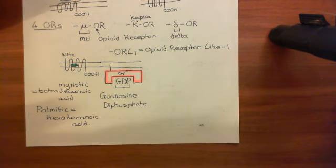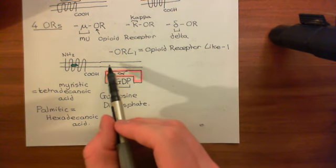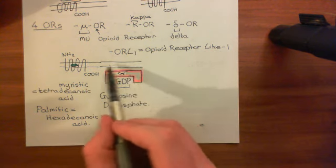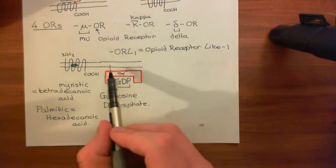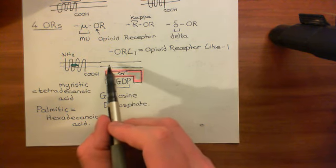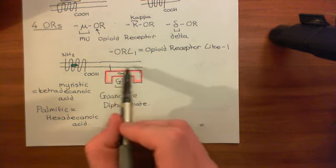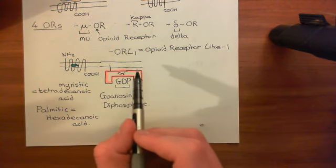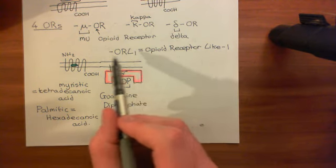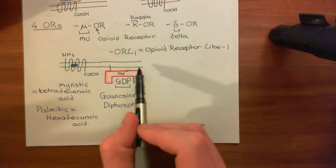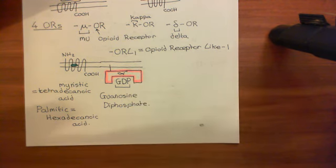The significance of these long-chain carboxylic acid groups is that they anchor into the inner leaflet of the phospholipid bilayer. This long-chain carboxylic acid implants into the inner leaflet, which holds the entire alpha subunit just underneath it. That is how the alpha subunit remains attached to the plasma membrane.